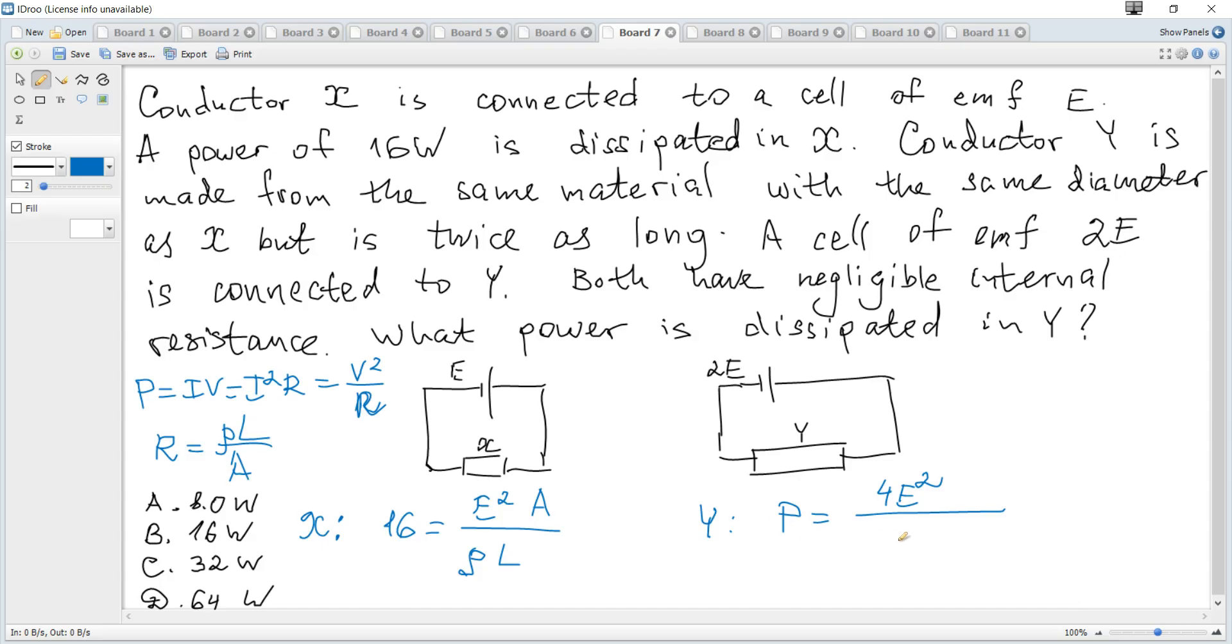Rho is the same as for X so it's Rho. Length is 2 times larger so if L for X so for Y it becomes 2L. And then divided by cross-sectional area is the same because diameter is the same. So A is the same.